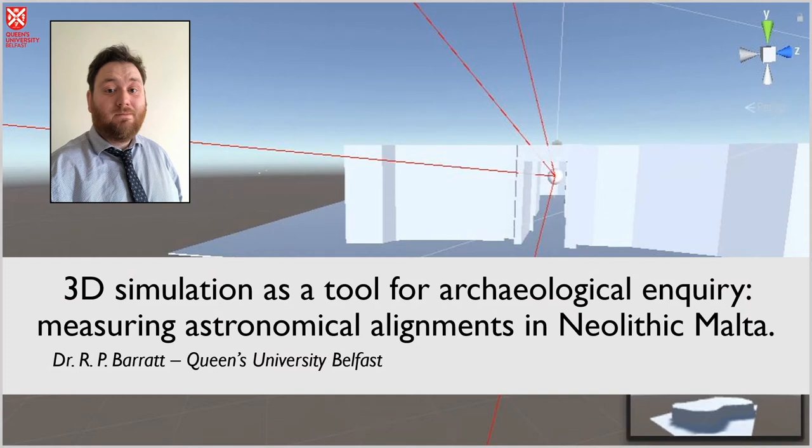Hello everyone and thank you for coming to my talk. My name is Robert Barrett and I'm a postdoc here at Queen's University Belfast. I'm currently looking at LED 210 dating but today we're not going to be talking about that. We're going to be talking about what I did for my PhD which I recently completed and specifically we're going to be looking at 3D simulation which we're going to see as a tool for archaeological inquiry and we're going to be using a test case from the Olympic Malta looking at astronomical alignments in the Olympic Malta.